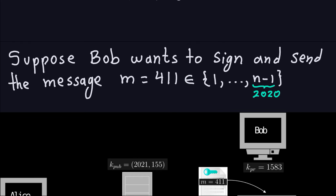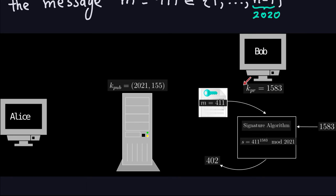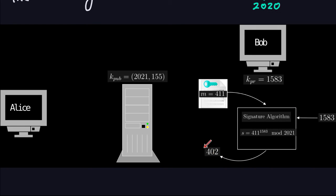Bob holds the private key d = 1583 and signs the message m = 411. The RSA signature algorithm raises the message to the private key modulo n: s = 411^1583 mod 2021. Using the square-and-multiply algorithm for modular exponentiation, this gives the signature s = 402. The signing algorithm takes two inputs: the message and the private key.